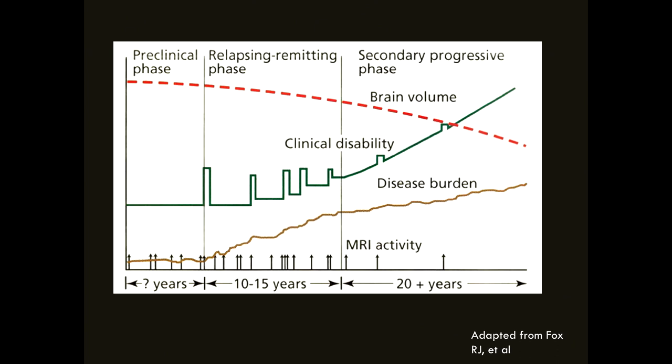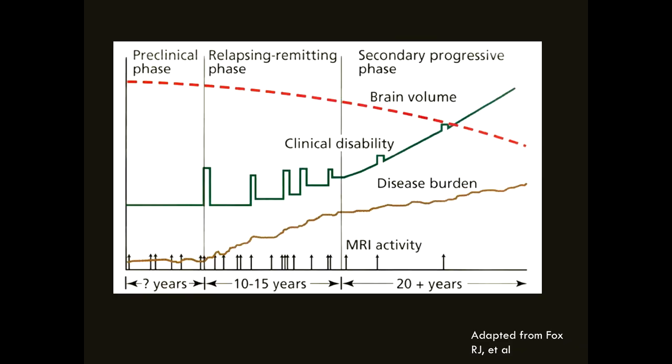MS starts even before we have symptoms — there's a preclinical phase. When patients present with their first clinical event, the MRI often shows lesions that have occurred without their awareness. There are episodes where new neurologic symptoms come, last a while, then recover. With time, there's increasing clinical disability. Even in the preclinical phase you start to lose brain volume, and as time goes on you see less and less MRI activity.